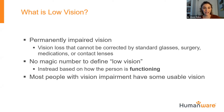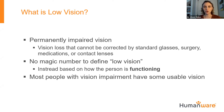I want to start by defining what low vision is. As you talk about low vision, you're going to hear a lot of different definitions — your ophthalmologist may define it a certain way, a teacher of the visually impaired may define it a certain way, and a person living with low vision may define it a certain way. We think about low vision as permanently impaired vision — vision loss that cannot be corrected by standard glasses, surgery, medications, or contact lenses.